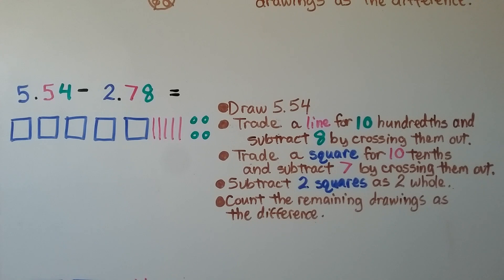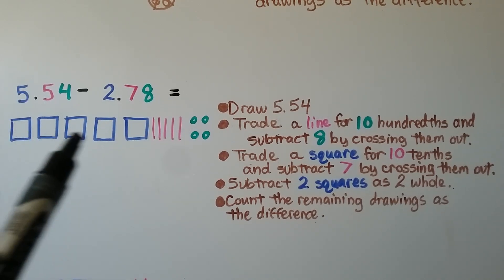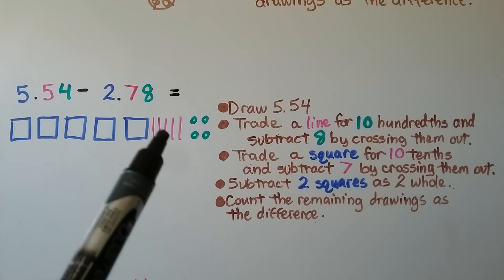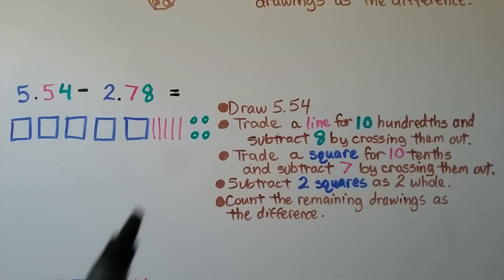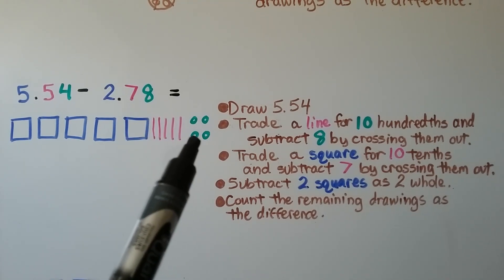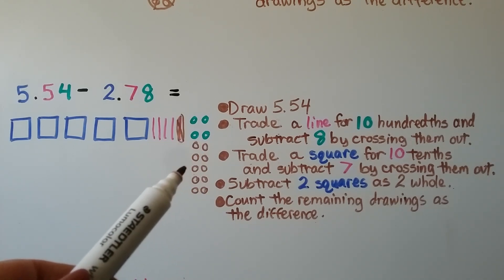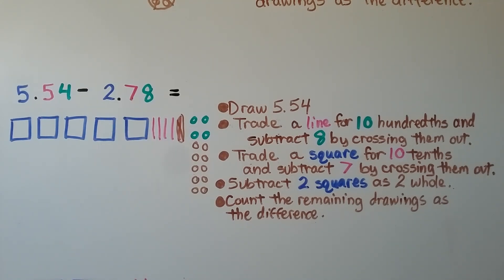Here we have 5 and 54 hundredths minus 2 and 78 hundredths. We start by drawing 5 squares, 5 lines, and 4 circles for 5 and 54 hundredths. We need to subtract 8 hundredths from 4 hundredths, and we can't. So we trade 1 of the lines for 10 hundredths — we cross out the line and draw 10 little circles. Now we can subtract 8 by circling and crossing them out.